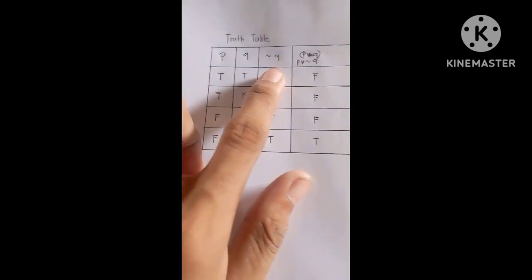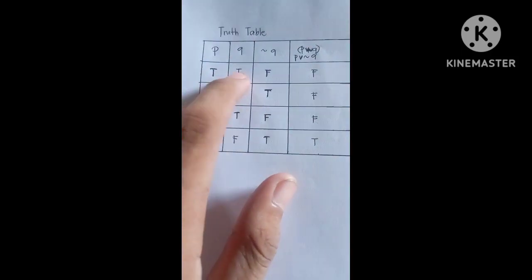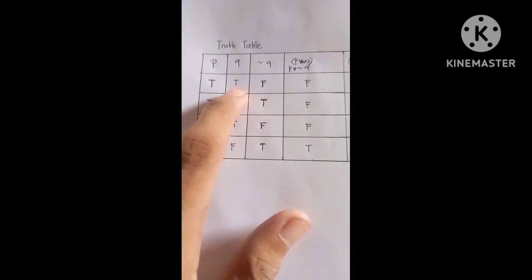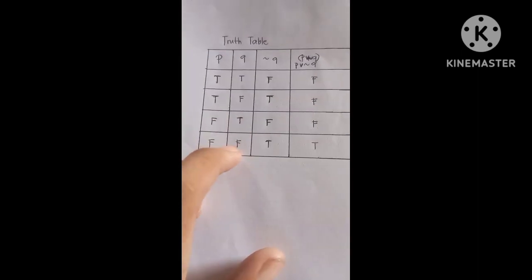And then the not Q, it is opposite of the Q, they are opposite. So true, then false, false, true, true, false, false, true.